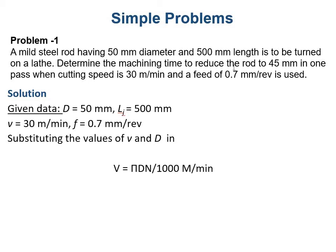Determine the machining time to reduce the rod to 45 millimeter in one pass when cutting speed is 30 meter per minute and a feed of 0.7 millimeter per revolution is used.